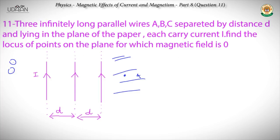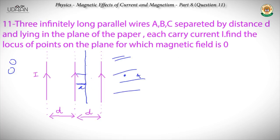The locus of points where the field is zero must lie between the wires. At any distance x from wire 2, if the magnetic field becomes zero, it happens for every point lying above this — so the locus would be a line. We label: wire 1, wire 2, and wire 3. Because of wire 1 the magnetic field will be into the plane, because of wire 2 it will be into the plane, and because of wire 3 it will be out of the plane.